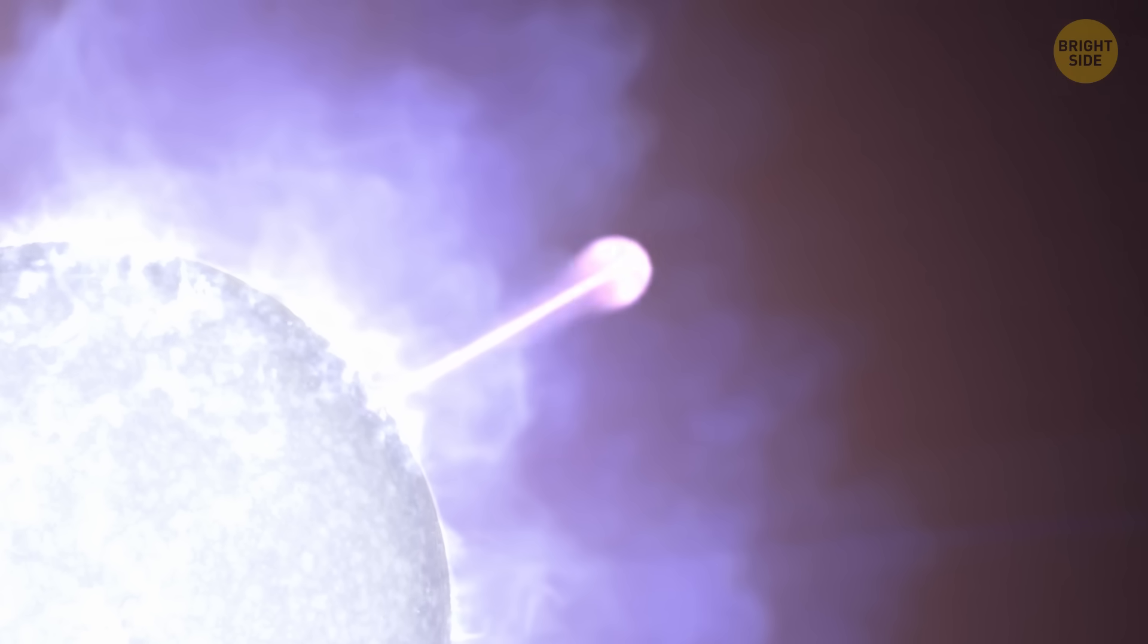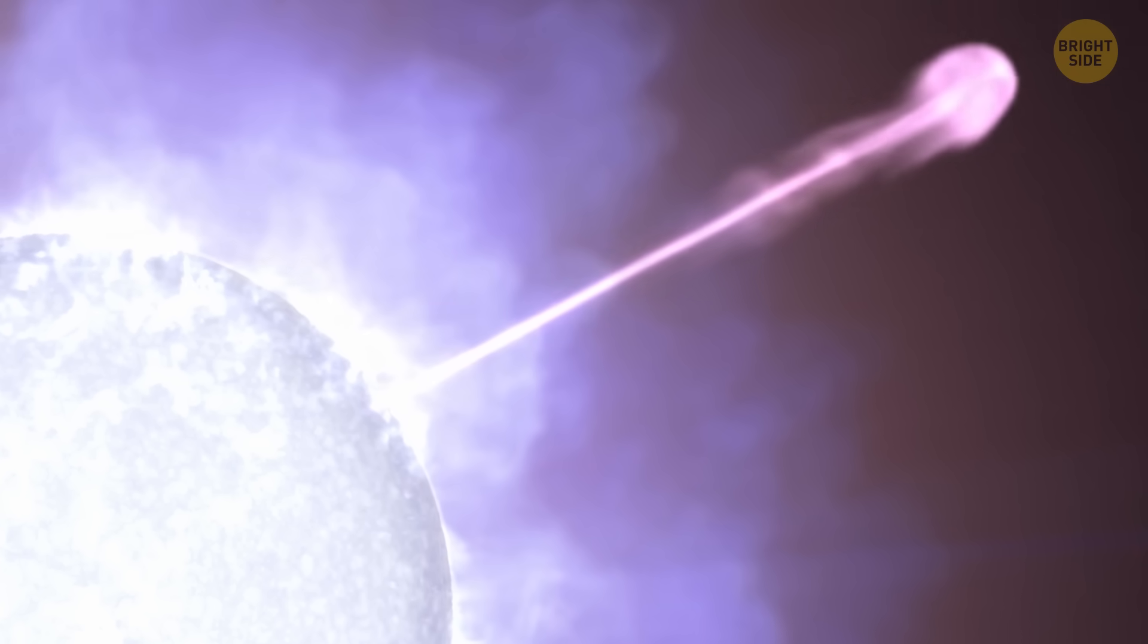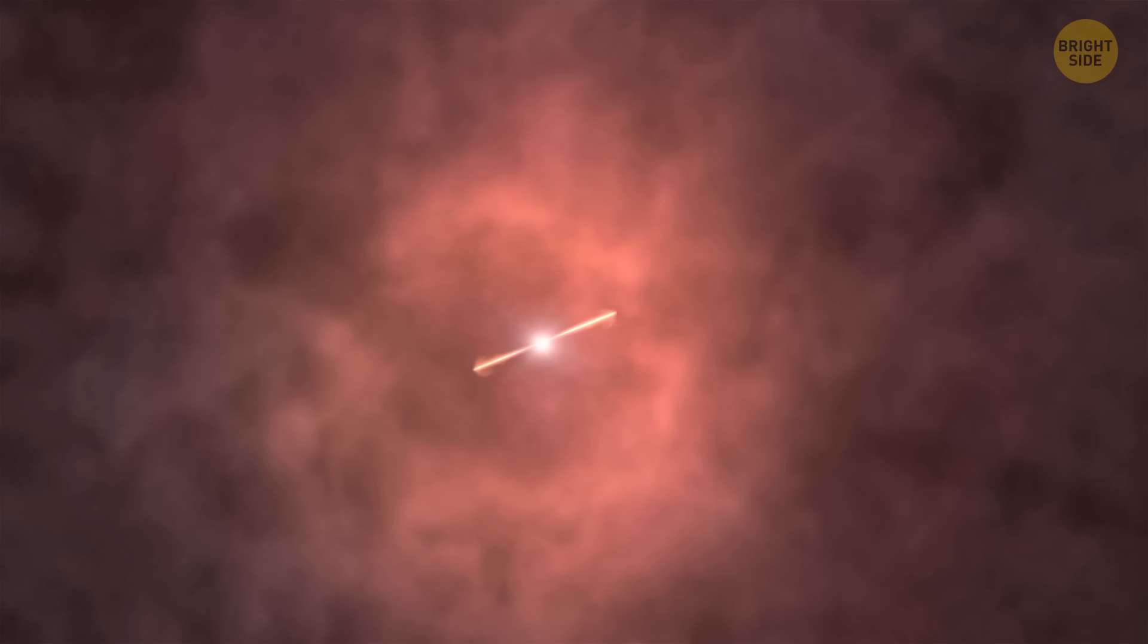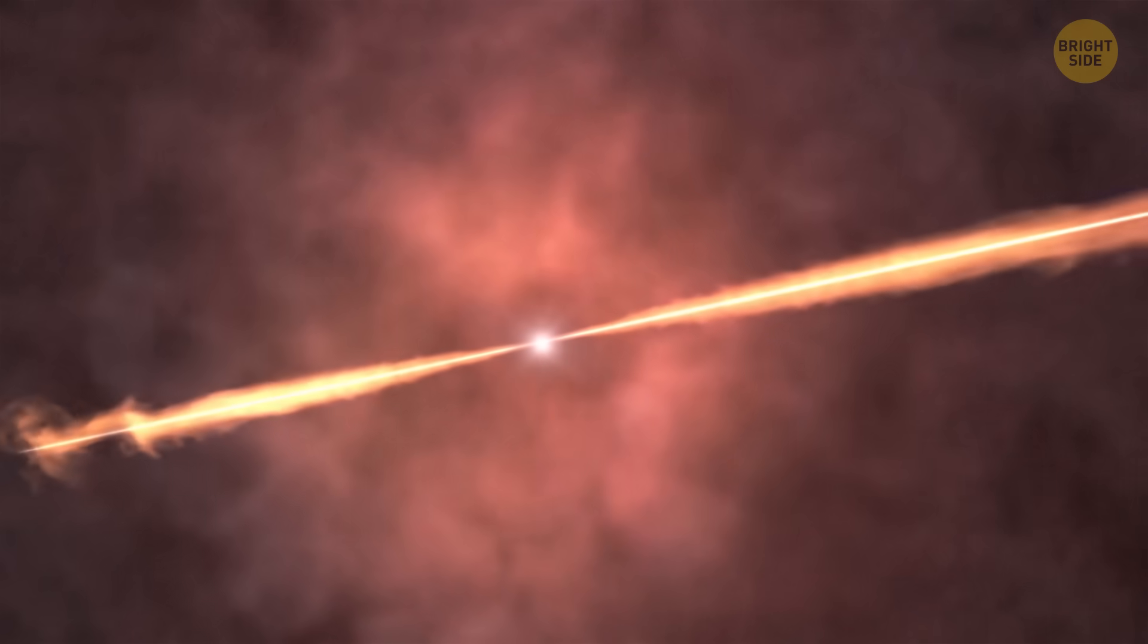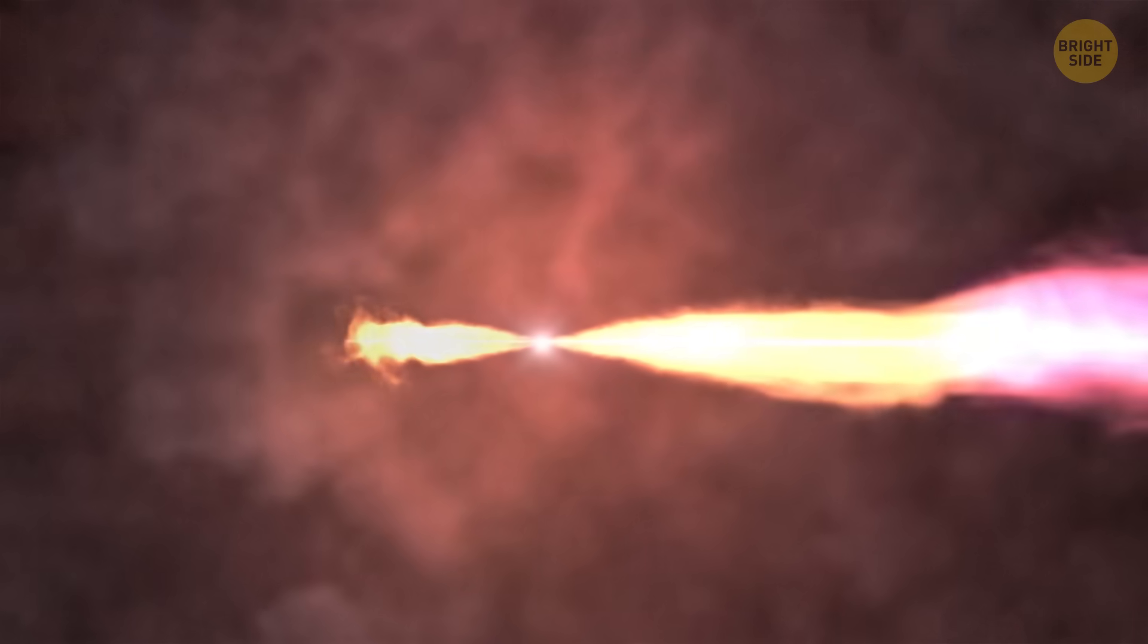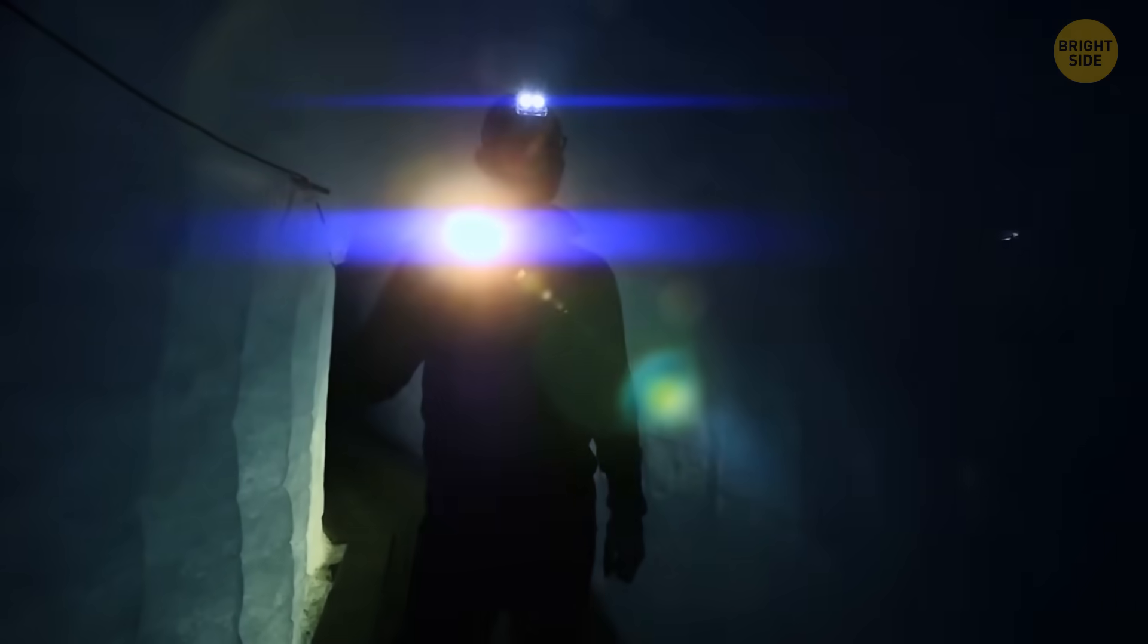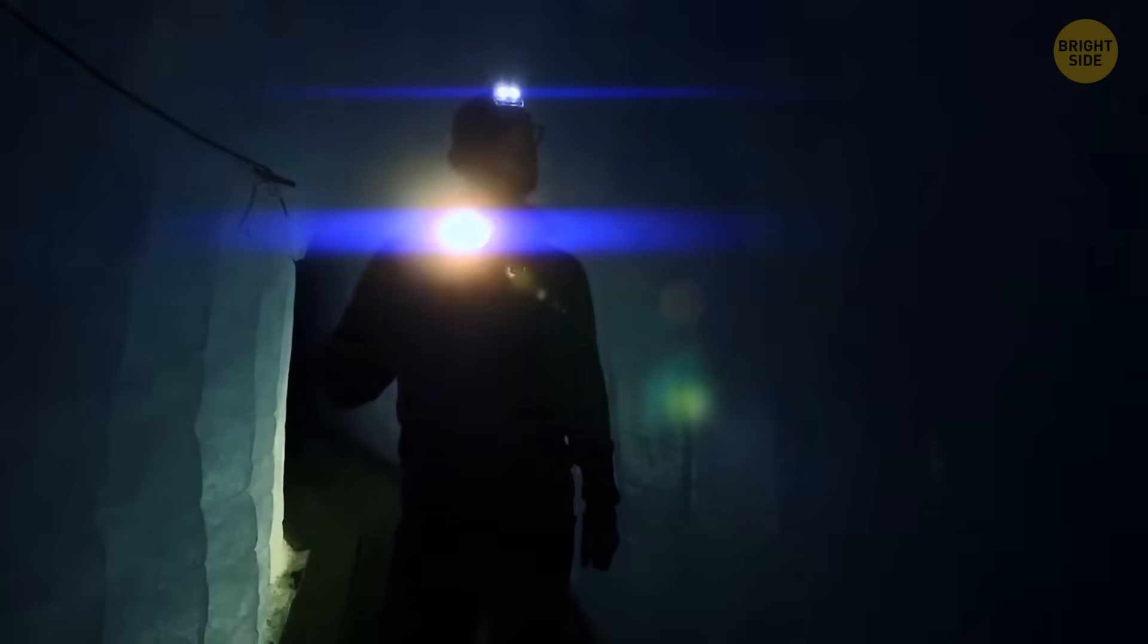Gamma-ray bursts are followed by jets. Those are twin beams of material shooting out from opposite sides of the collapsing object. They're super fast, moving at nearly the speed of light. These jets appear brighter if they're pointed directly at us. It's like how a flashlight beam is brightest when it's aimed straight at you rather than at an angle.